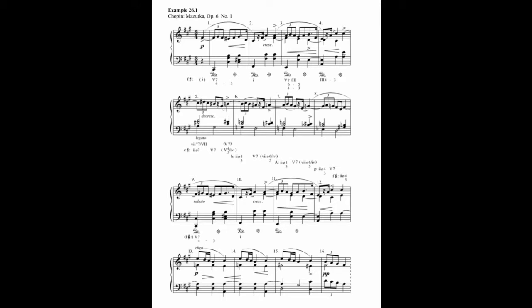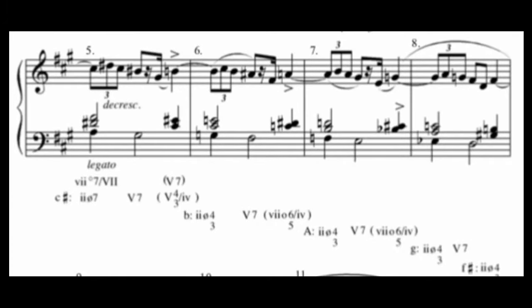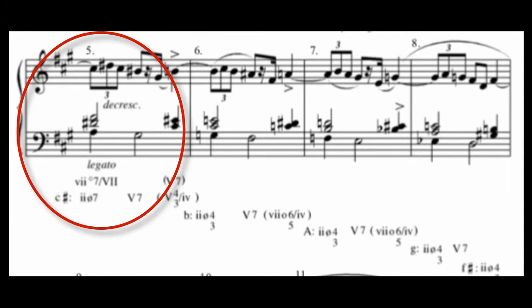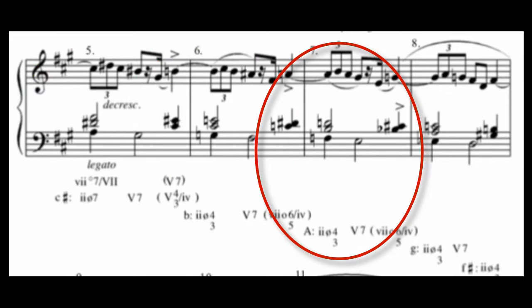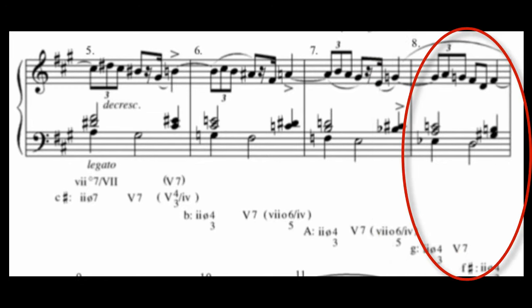After a gesture to the parallel major A in measures 2 to 3, Chopin seems to pass through — yet never resolve to — a descending pattern of key areas: C-sharp minor, B minor, A major, G minor, and then finally by measure 9, the music returns to the original key of F-sharp minor.